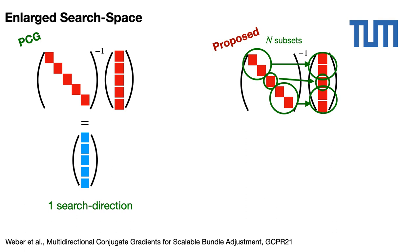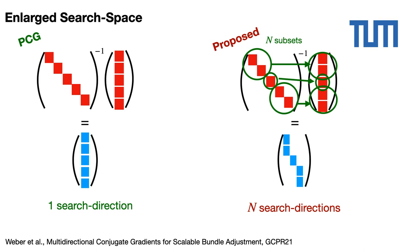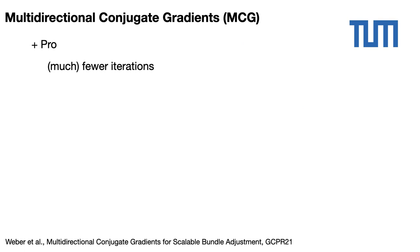What we propose is to apply each block corresponding to a subset directly to the associated residuals that correspond to the same subset. Consequently, the conjugate vectors in PCG are now replaced by conjugate matrices, and each column corresponds to a local preconditioned solve. The search space is then significantly enlarged, and multiple search directions are generated at each inner iteration instead of only one. The MCG algorithm needs much fewer iterations to converge. Nevertheless, as we now consider matrices and no more vectors, an additional cost could be taken into account.